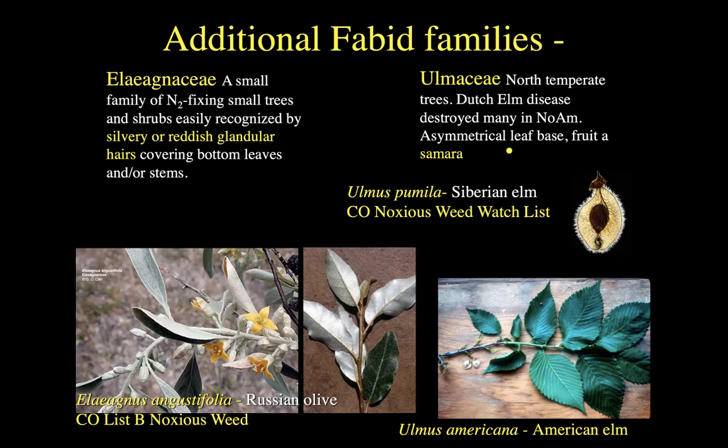Siberian elm is in the Ulmaceae, the elm family. Out east, beautiful species like the American elm, Ulmus americana, have been decimated by Dutch elm disease. The main way you can tell the genus Ulmus is that the base of the leaves is asymmetrical. The fruit is going to be a little samara — not as obvious as a maple, but kind of has two wings at the tip.